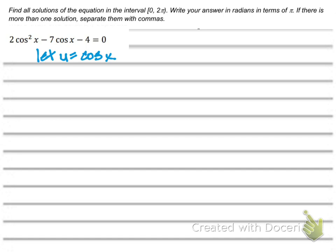So that means I can rewrite that equation as 2u² minus 7u minus 4 equals 0. Now I'm going to solve it just like it's a regular quadratic equation. I'm going to have two sets of parentheses with a 2u in each set to factor it equals 0.